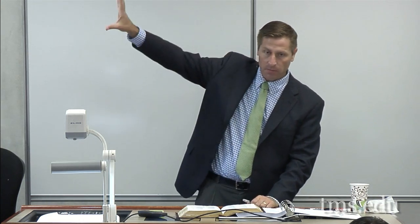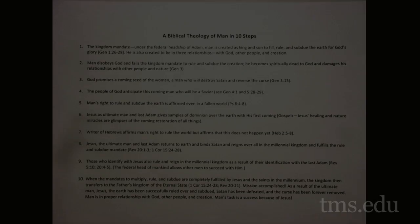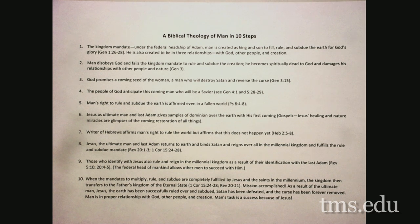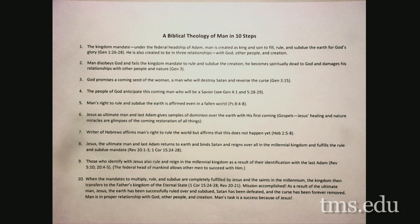It's not the case that before the fall man ruled the earth, but after the fall our destiny is just to fly away and have nothing to do with the earth ever again. So to summarize where we stand: Point 1 — the kingdom mandate of Genesis 1:26–28. Point 2 — the fall; man disobeys God, fails the kingdom mandate, and is spiritually separated from God. Point 3 — the promise of a coming seed of the woman who will destroy the power behind the serpent and reverse the curse. Point 4 — the people of God anticipate the coming man who will be a savior. Point 5 — man's right to rule and subdue the earth is affirmed even in a fallen world.